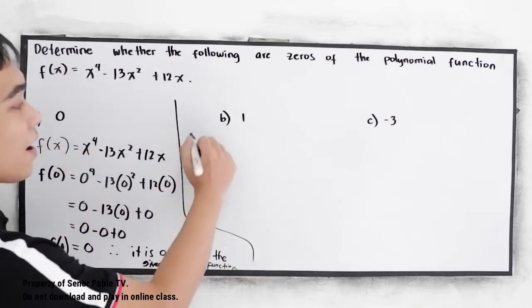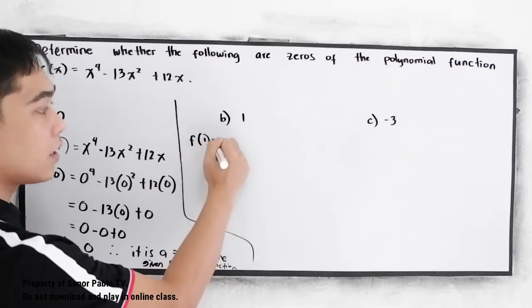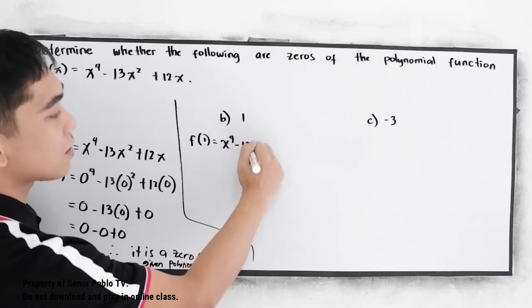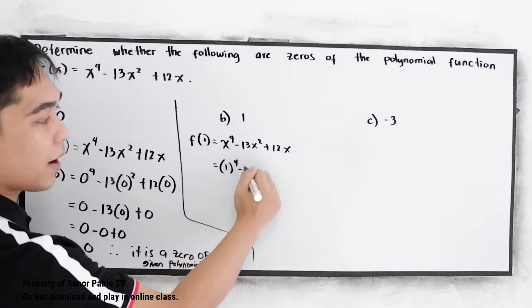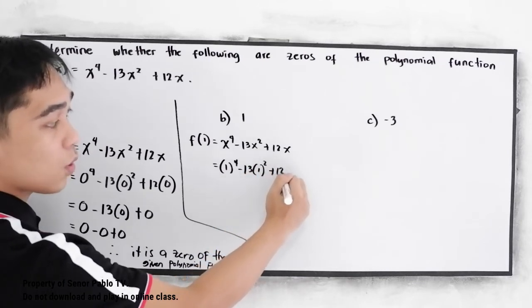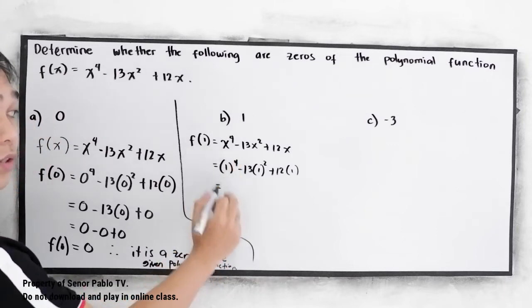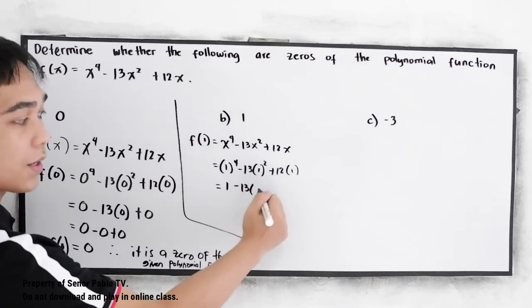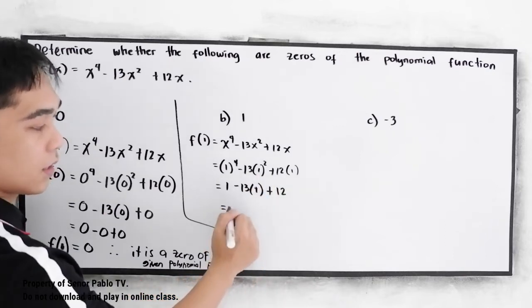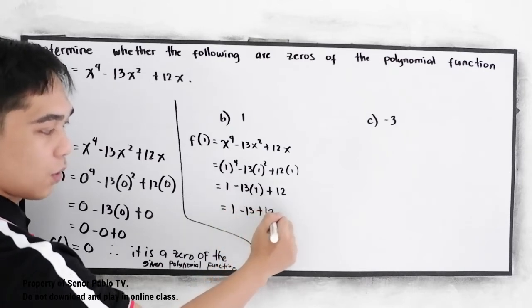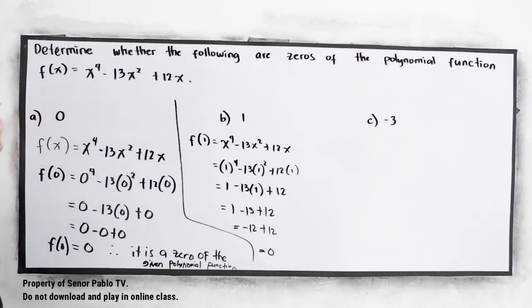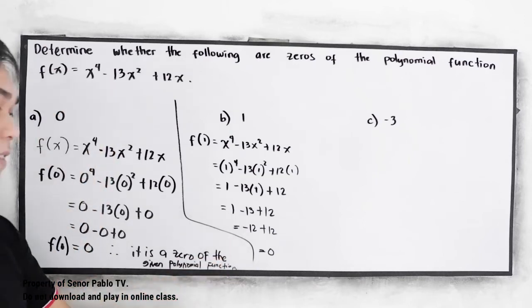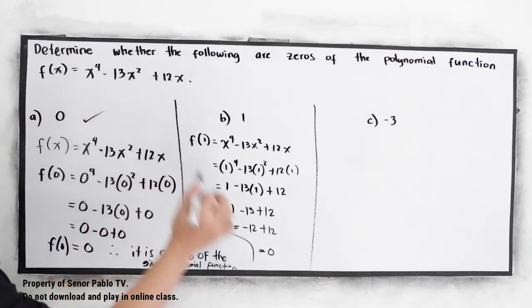Letter B: f of 1 is equal to 1 raised to 4 minus 13 times 1 squared plus 12 times 1. So 1 minus 13 plus 12. That gives us negative 12 plus 12, which equals 0. Therefore, 1 is a zero of the given polynomial function.